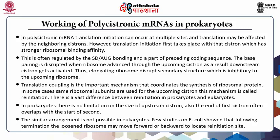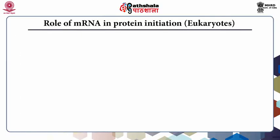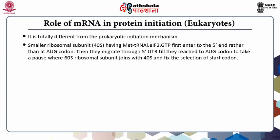The role of mRNA in protein initiation in eukaryotes is different from prokaryotes. The smaller ribosomal subunit carrying methionine-tRNA, elongation factor eIF2, and GTP first enters at the 5-prime end rather than at the AUG codon. They then migrate through the 5-prime UTR until they reach the AUG codon, where they pause, and then the 60S ribosomal subunit joins and fixes the selection of the start codon.